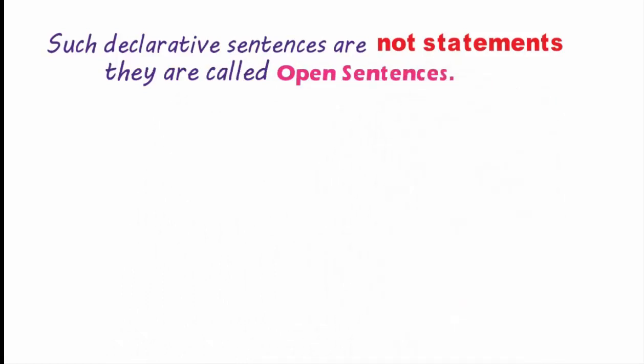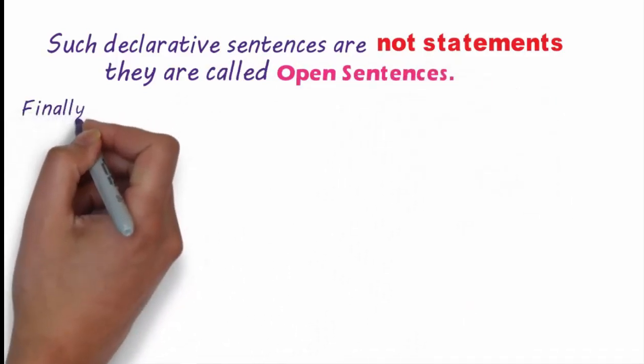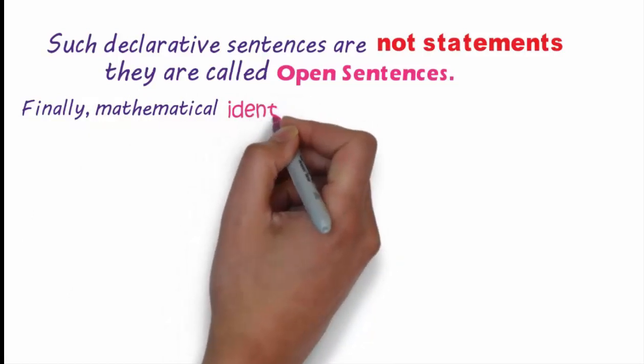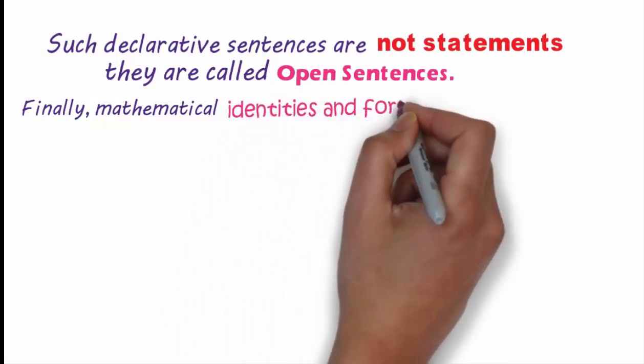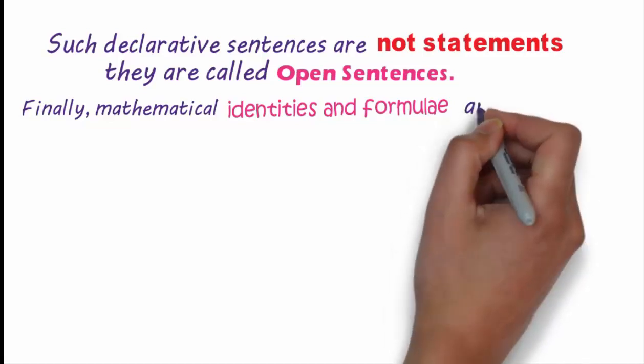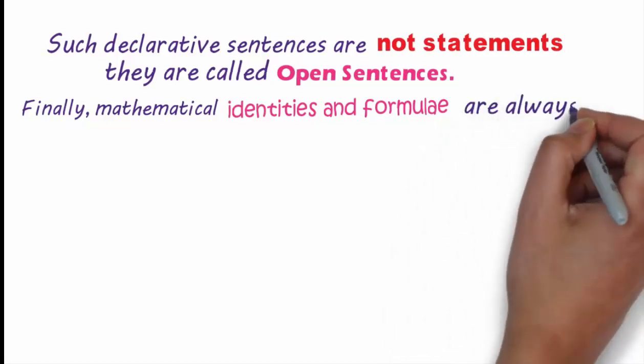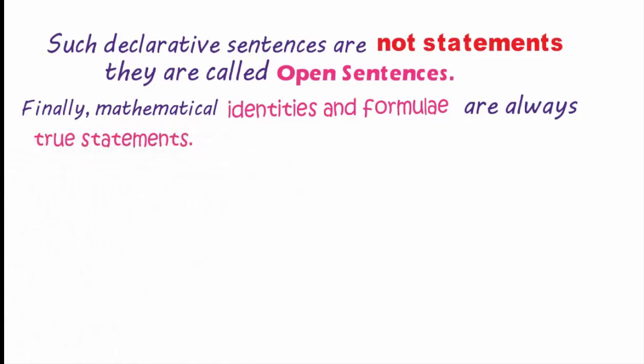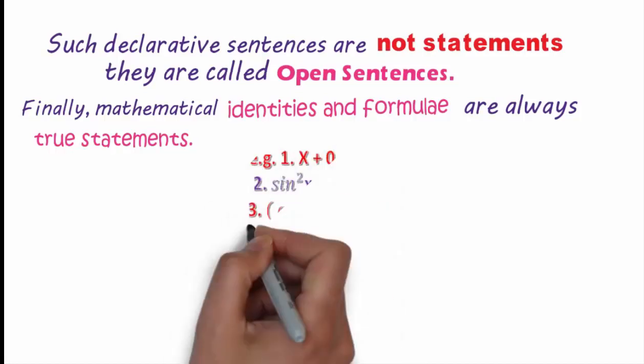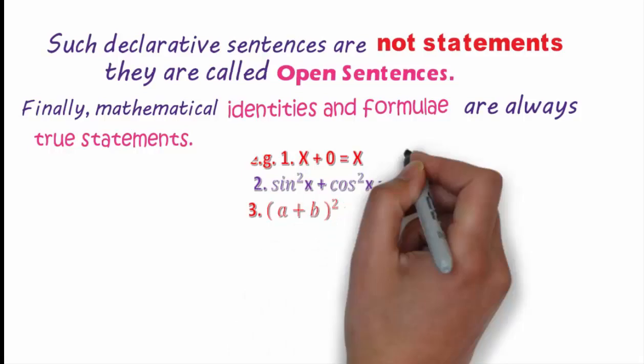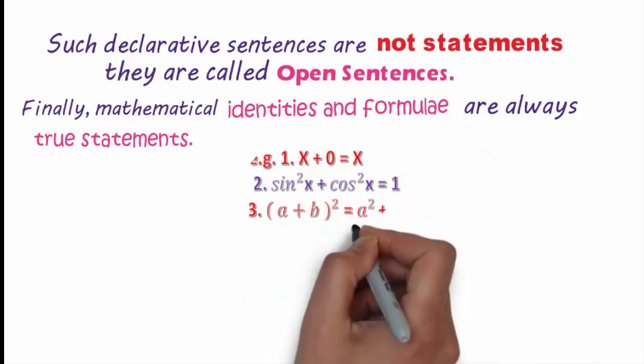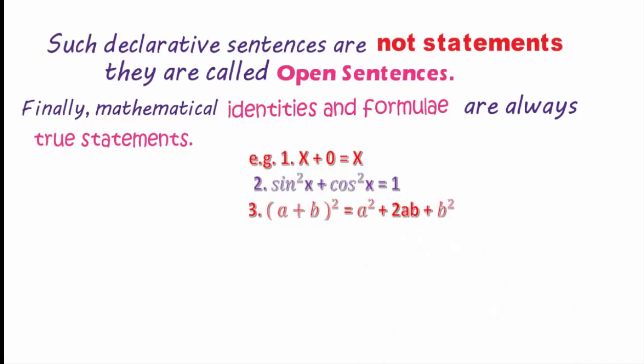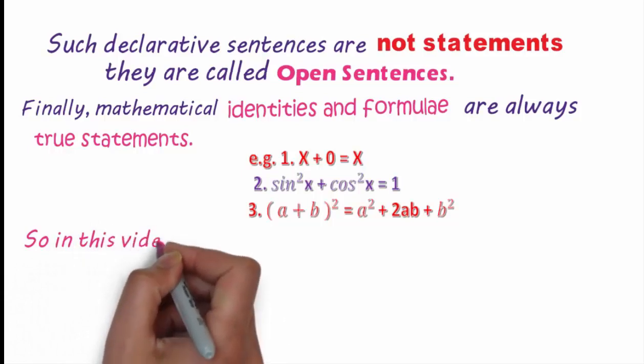Finally, mathematical identities and formulas are always true statements. Example: x plus 0 is equal to x. sin square x plus cos square x is equal to 1. (a plus b) square is equal to a square plus 2ab plus b square. These are true statements.